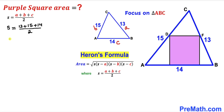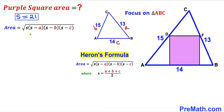Simplifying, s equals 42 divided by 2, so our s value turns out to be 21 units. Now we calculate the area of this triangle. We know s = 21, a = 13, b = 15, and c = 14, so we substitute: area equals the square root of 21 times (21 minus 13) times (21 minus 15) times (21 minus 14).